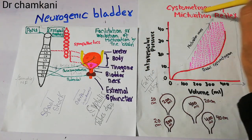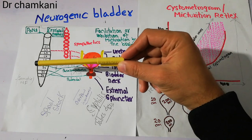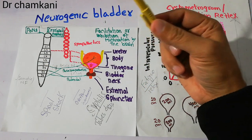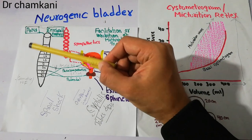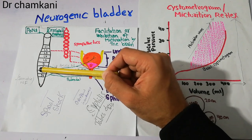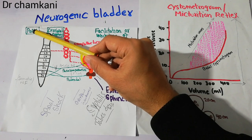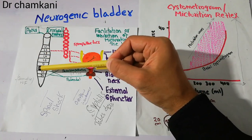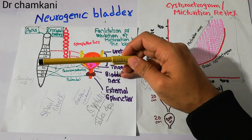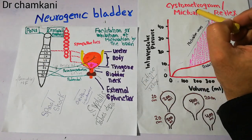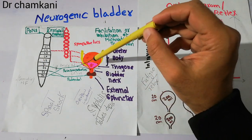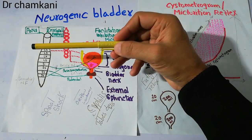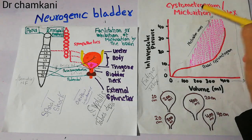The micturition reflex starts due to the receptors, with the sacral segment of the spinal cord involved in this process. But the brain is also involved. Brain centers in the brain stem and cerebral cortex send facilitative signals, which help the sacral segment start the micturition reflex. They also send inhibitory signals, which stop the micturition reflex from starting. So the reflex can be executed at the sacral segment, but the brain modulates it through both inhibitory and facilitative signals.